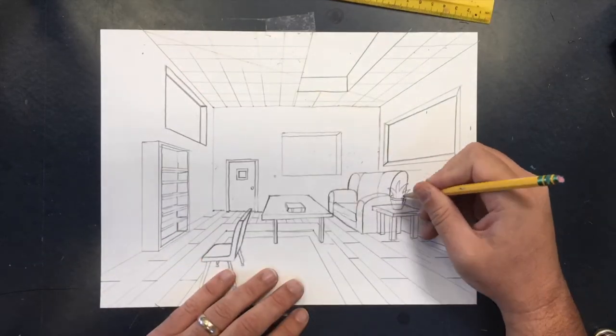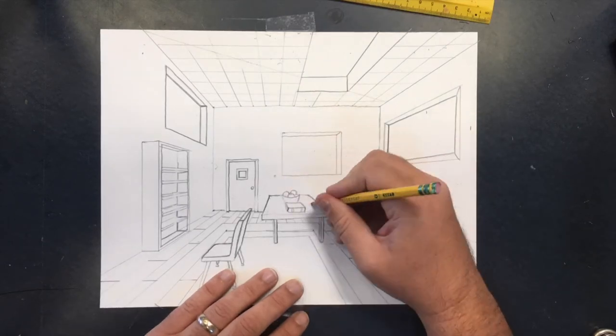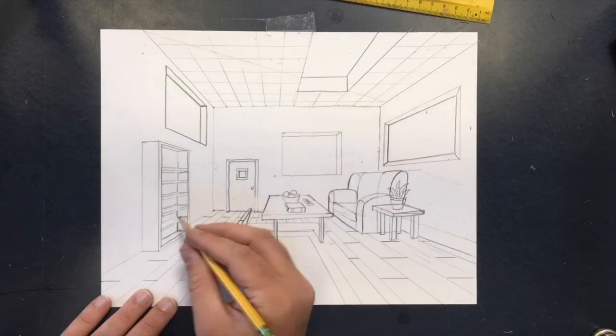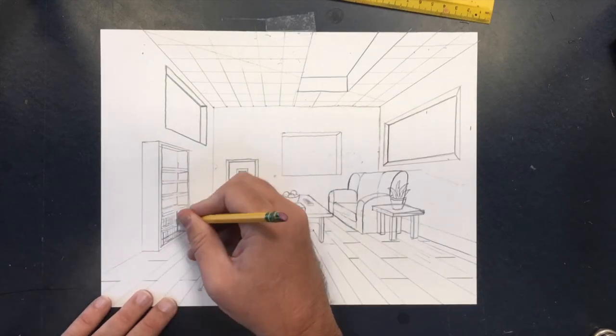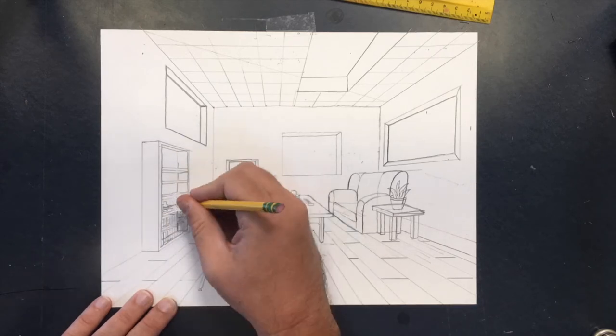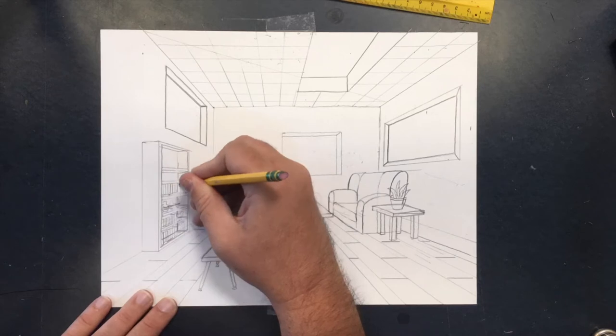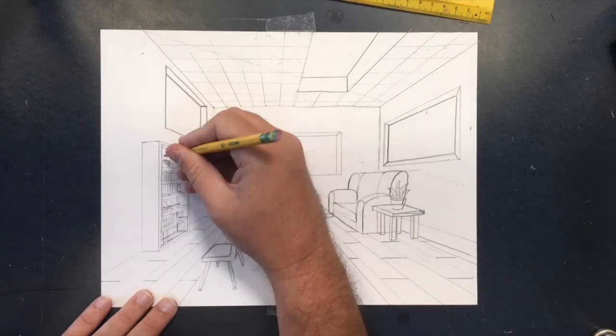When you draw organic shapes like plants or fruit, you don't need to use the vanishing point to make guidelines. Just draw those things the way you normally would, but pay attention to where you draw those objects because you wouldn't want a plant right on the edge of a table, for example. You want the plant in the middle of the table, so that's where the bottom of that shape goes. Put the bottom of the shape where you want it to be in the room.